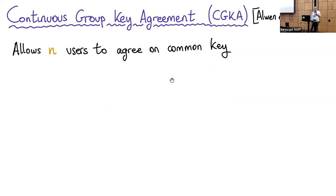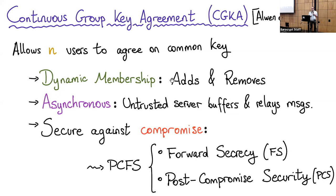Very roughly, CGKA allows a group of n users to agree on a common key with the following properties. We want to support dynamic membership — in particular, we want to be able to add and remove users from the group. We want it to be asynchronous, meaning we make no assumptions on the online behavior of users, so we have some untrusted server that buffers messages. And we want it to be secure against compromise — the adversary can corrupt users.